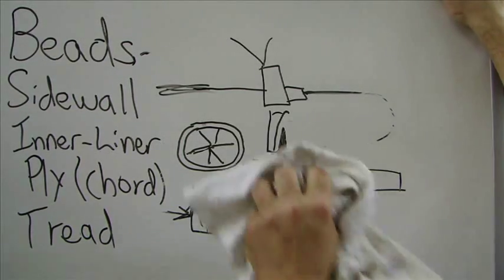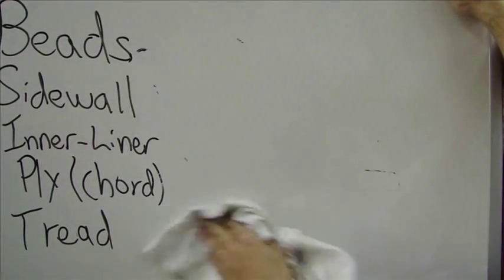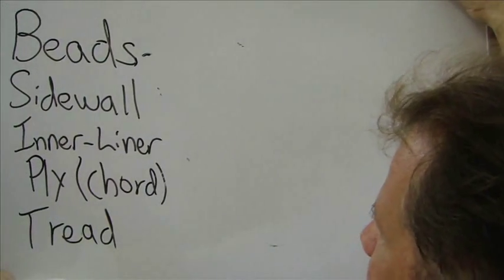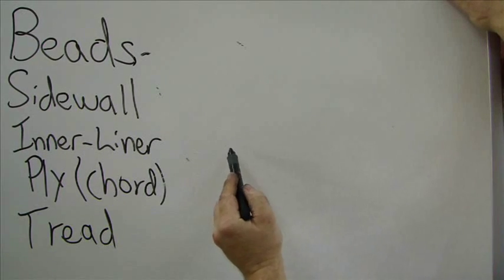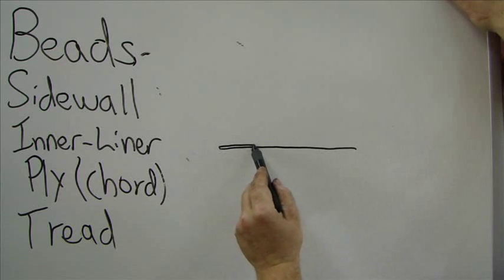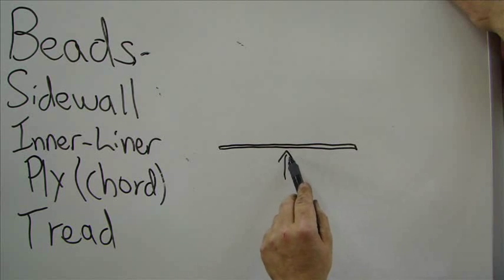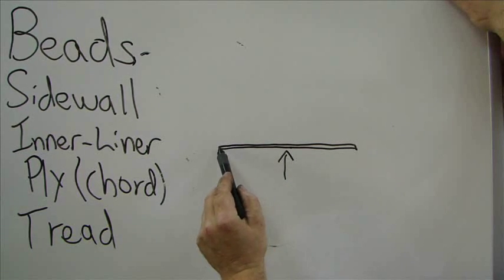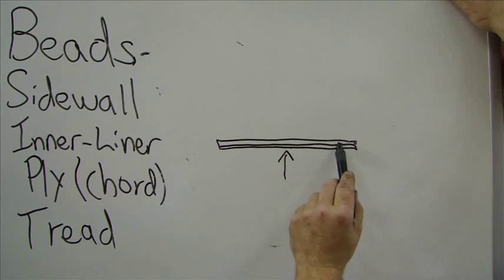Now I'll talk about inner liner. The inner liner is a starting point for all tires. You saw when I was building the tire on the building machine, the first thing you put down is the inner liner. The inner liner is a piece of rubber that's very soft. And this is what protects, this would be the inside of the tire. So the air is not going to get through this layer.